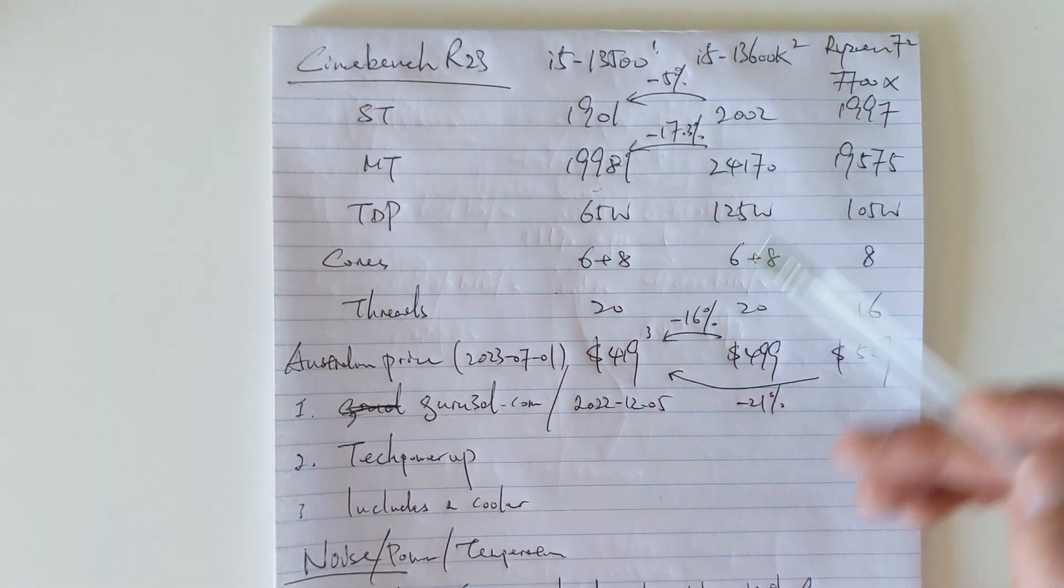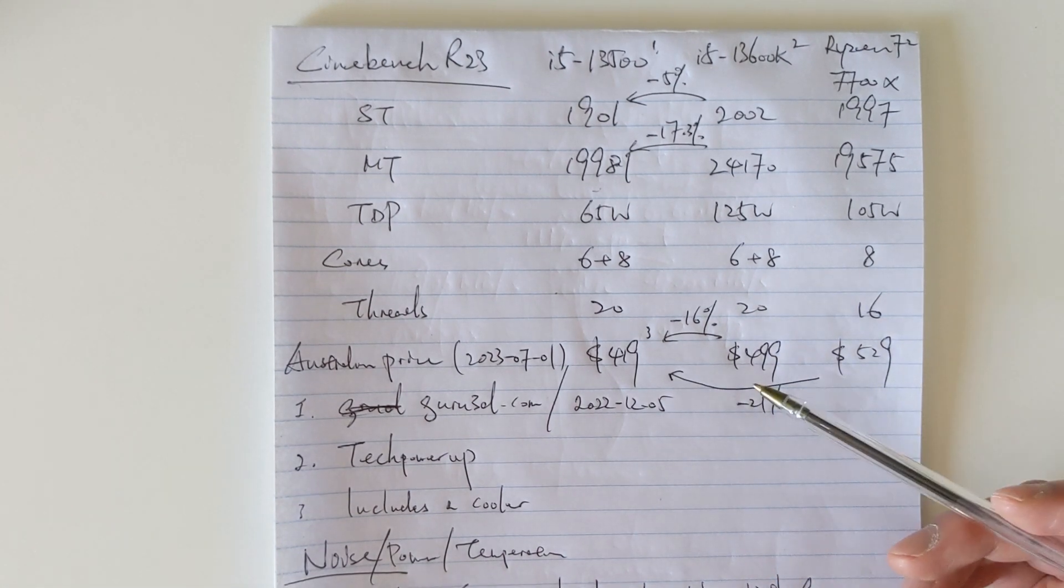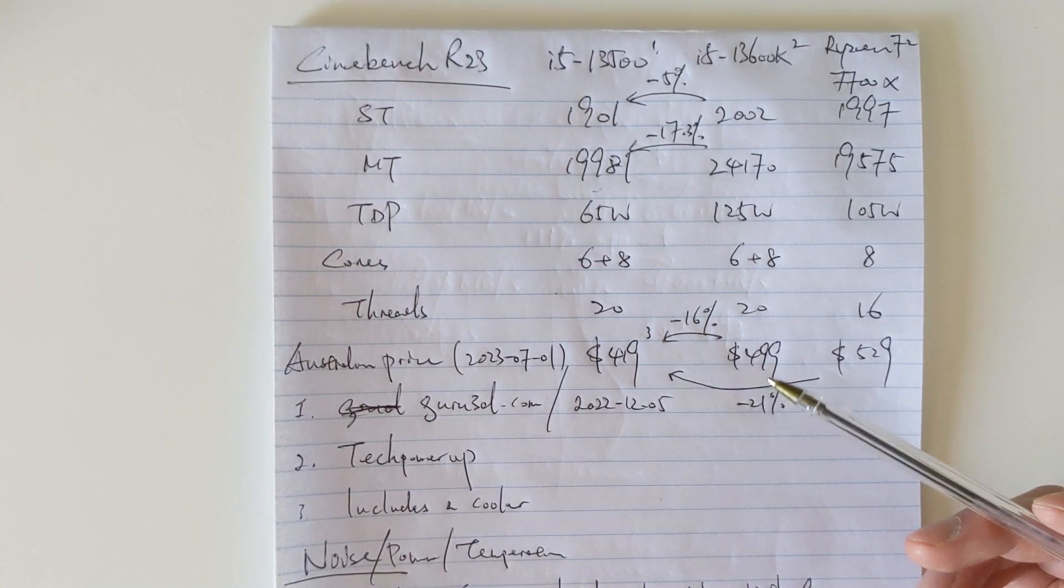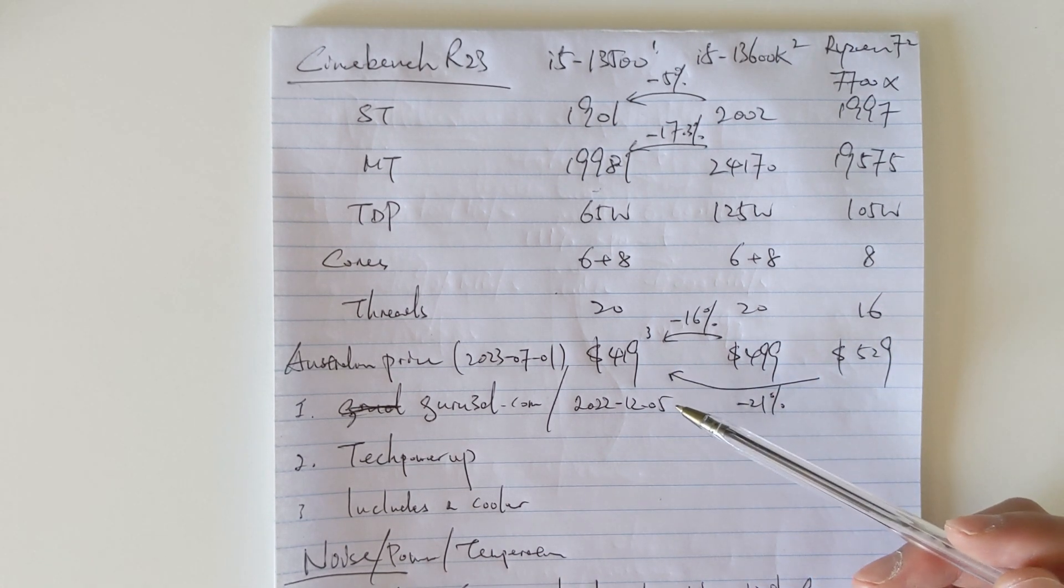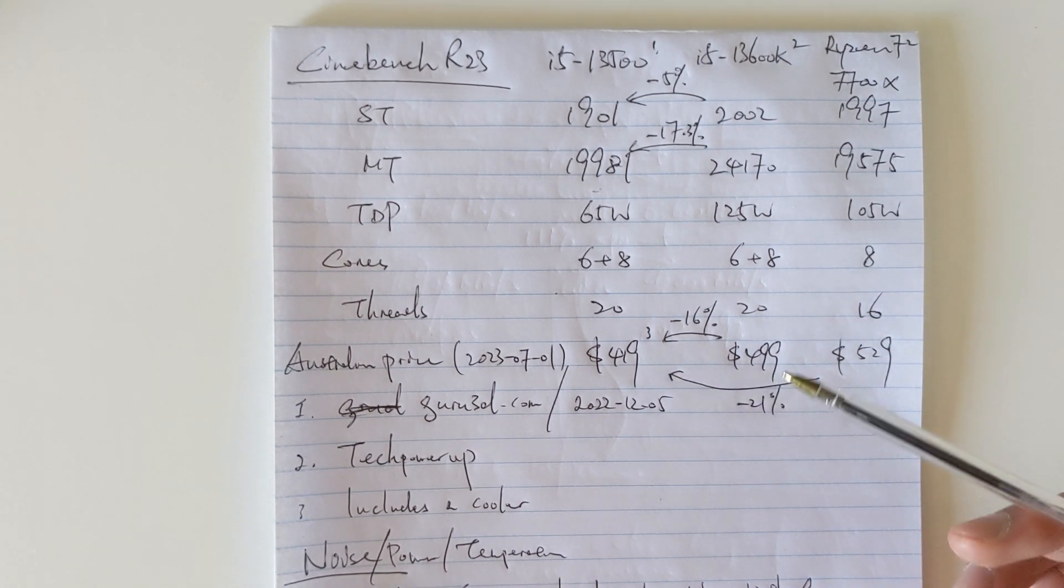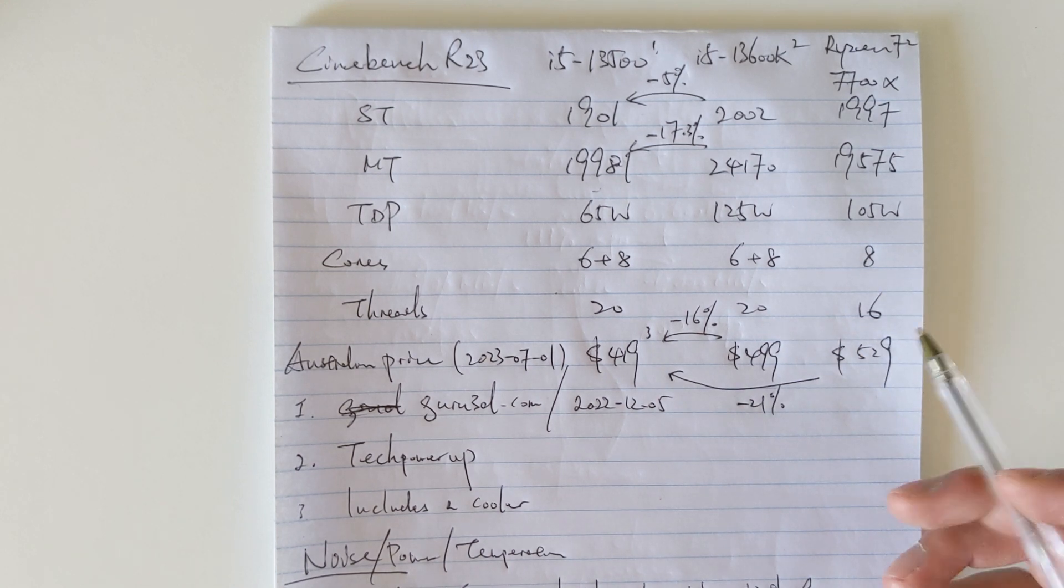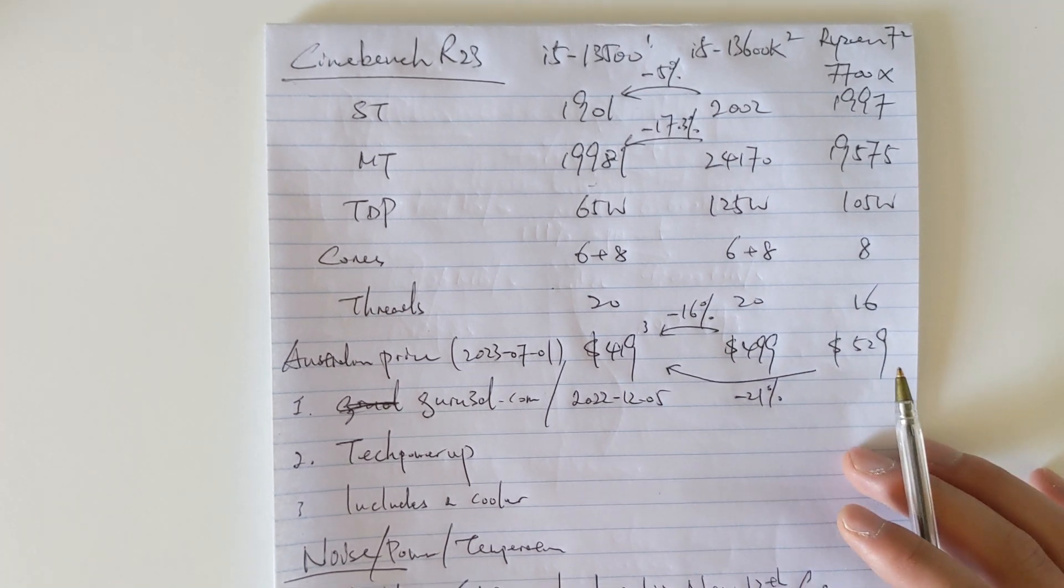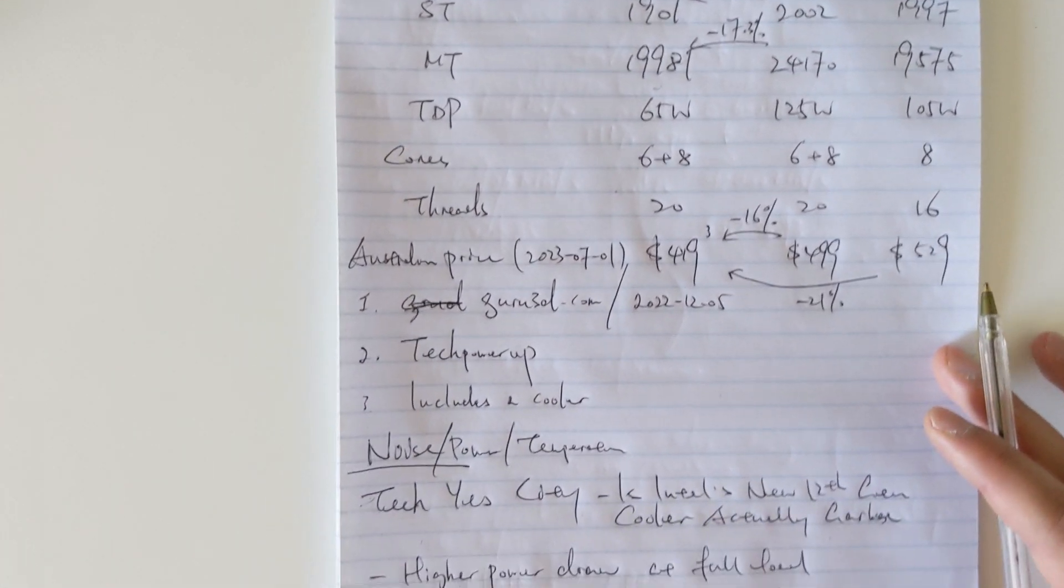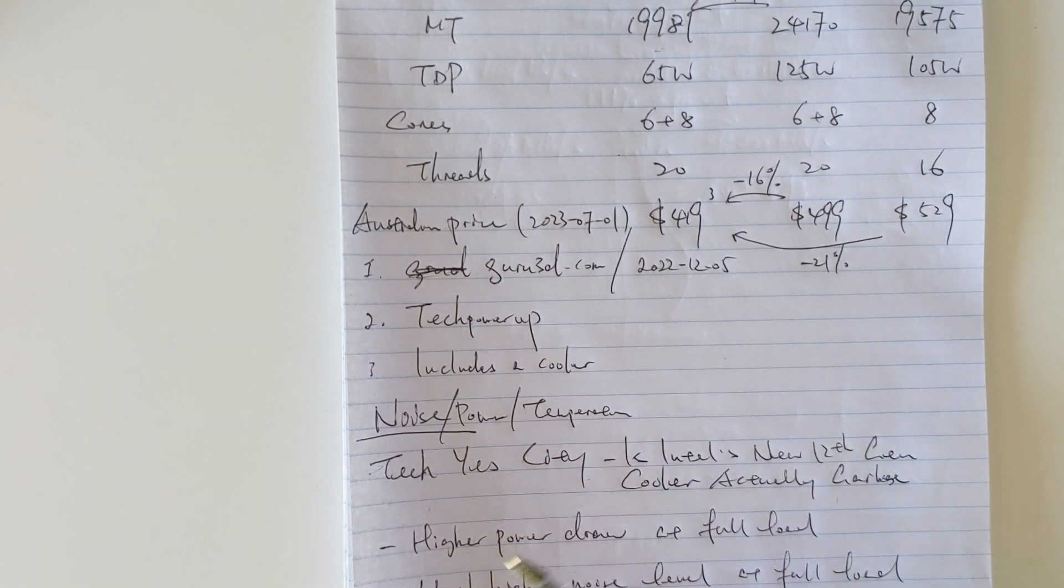We also need to mention that the 13500 also contains a cooler, so if you can buy a CPU without the cooler, you might save maybe 10 to 20 dollars, which is quite significant and will bring your system cost down a bit more.